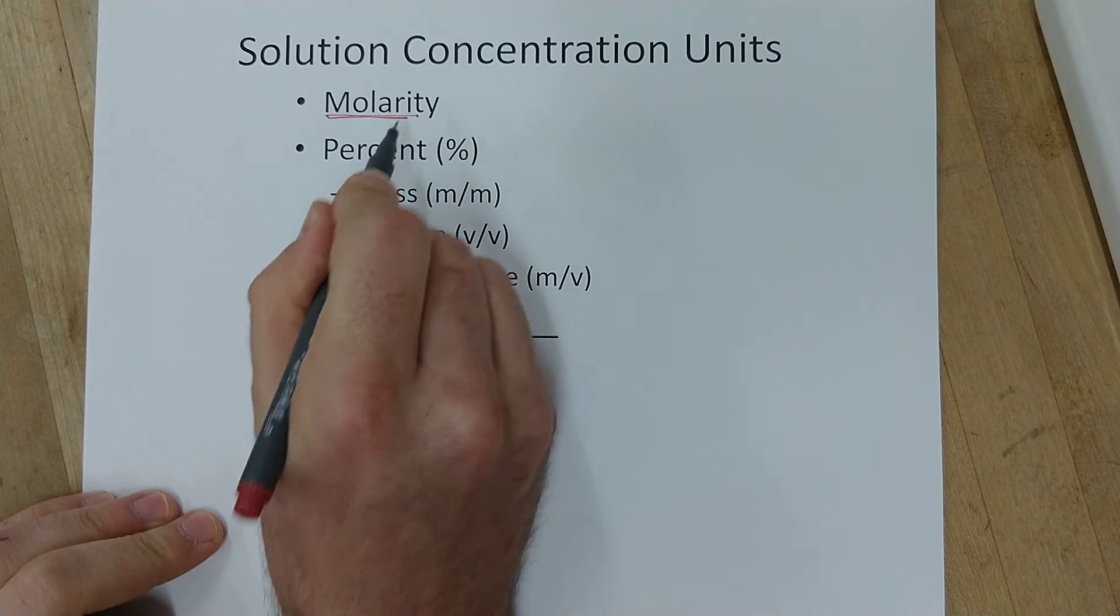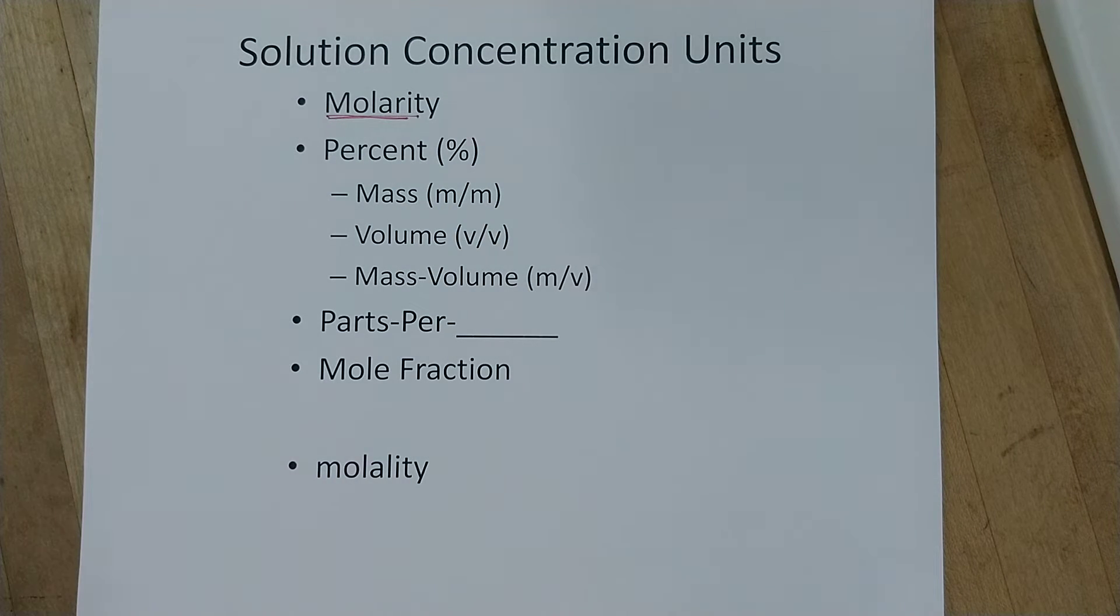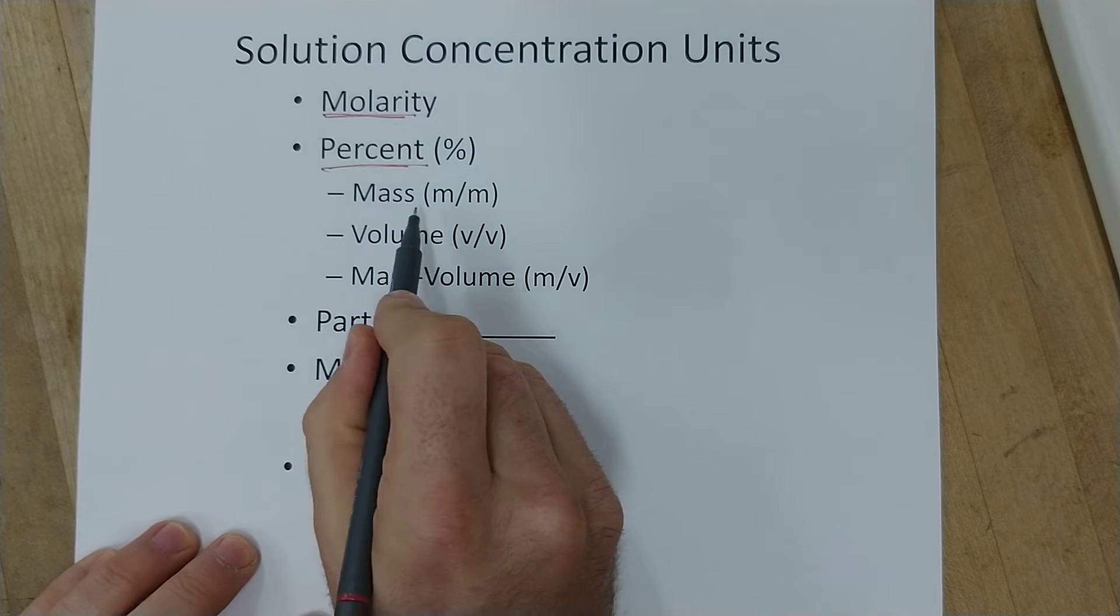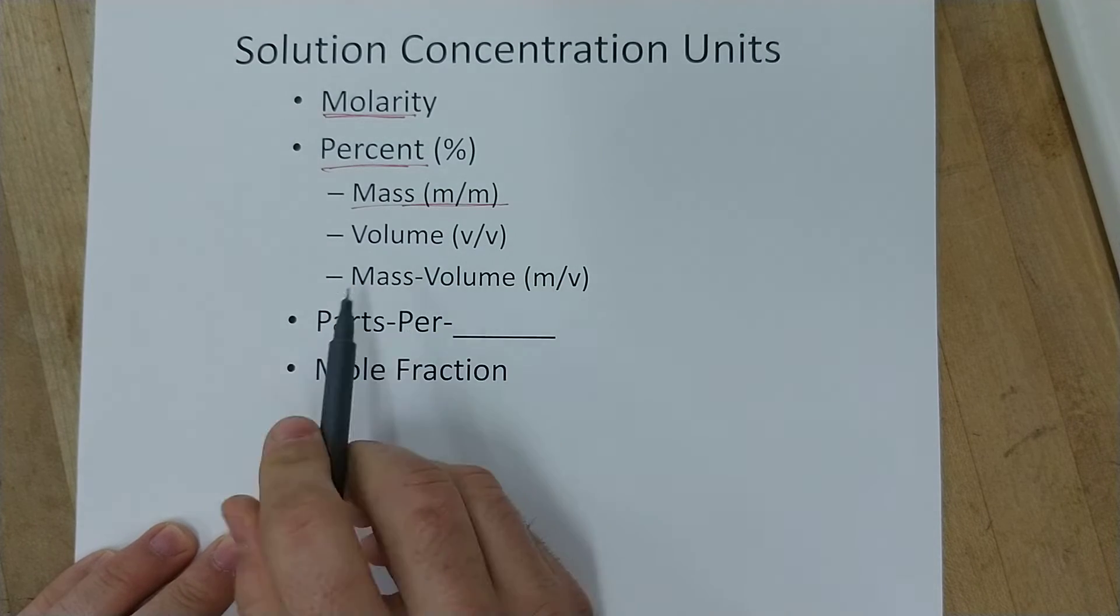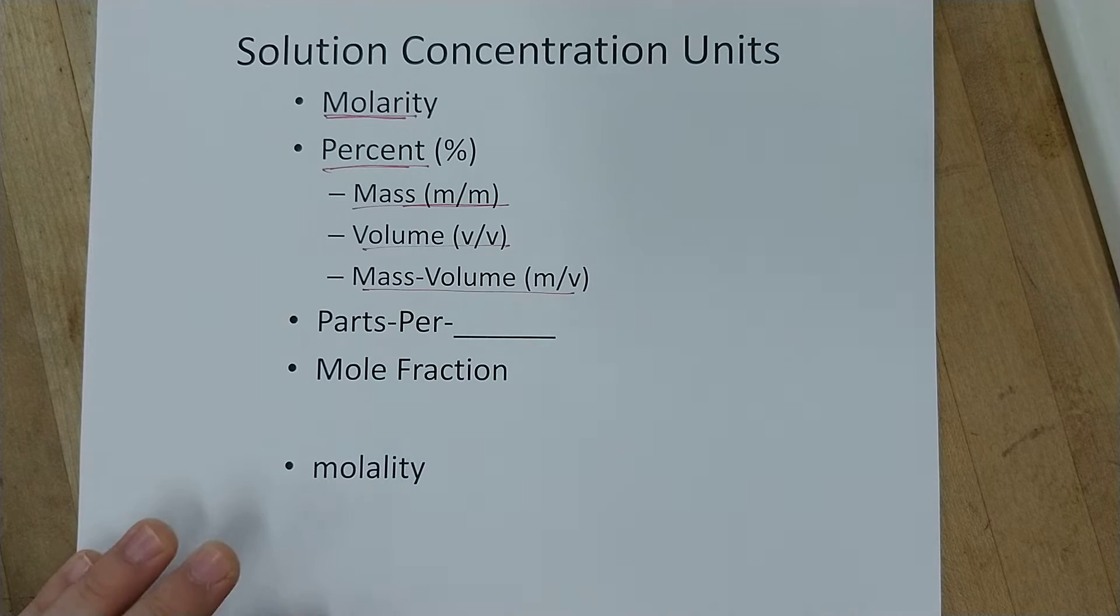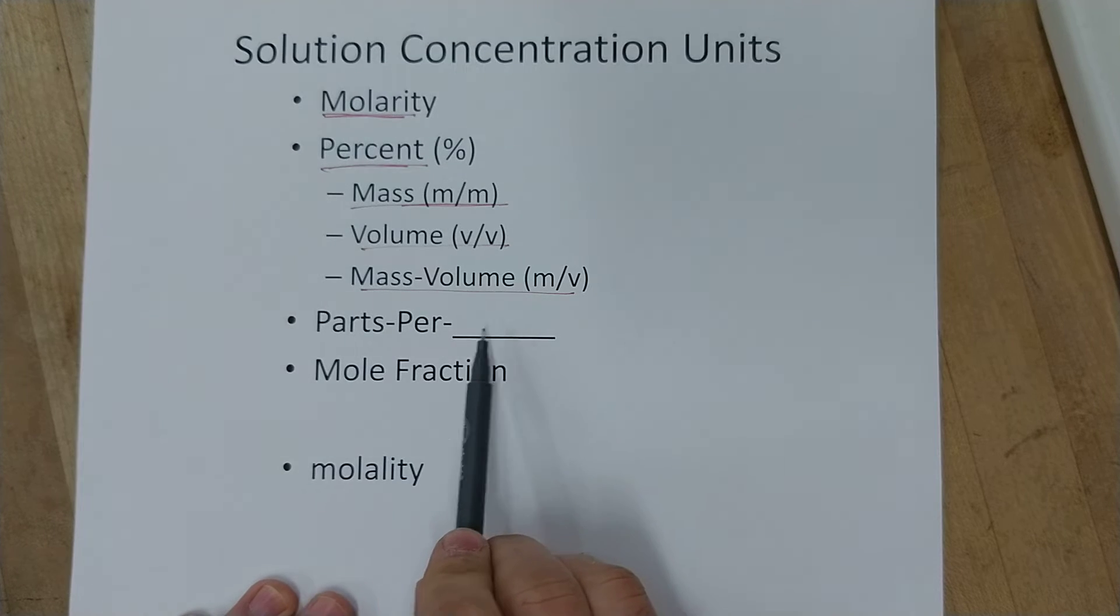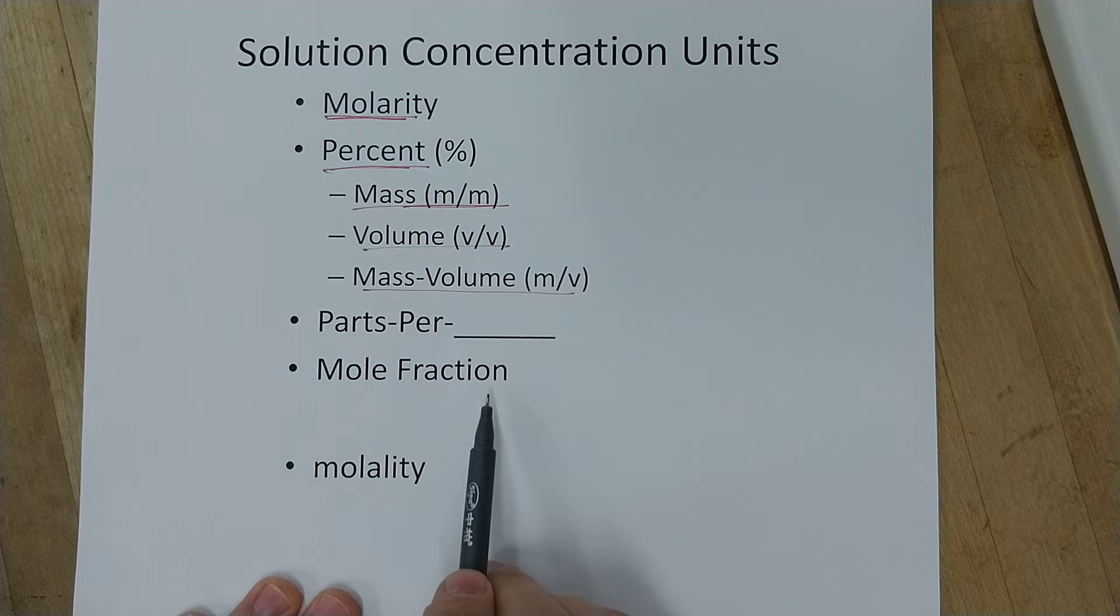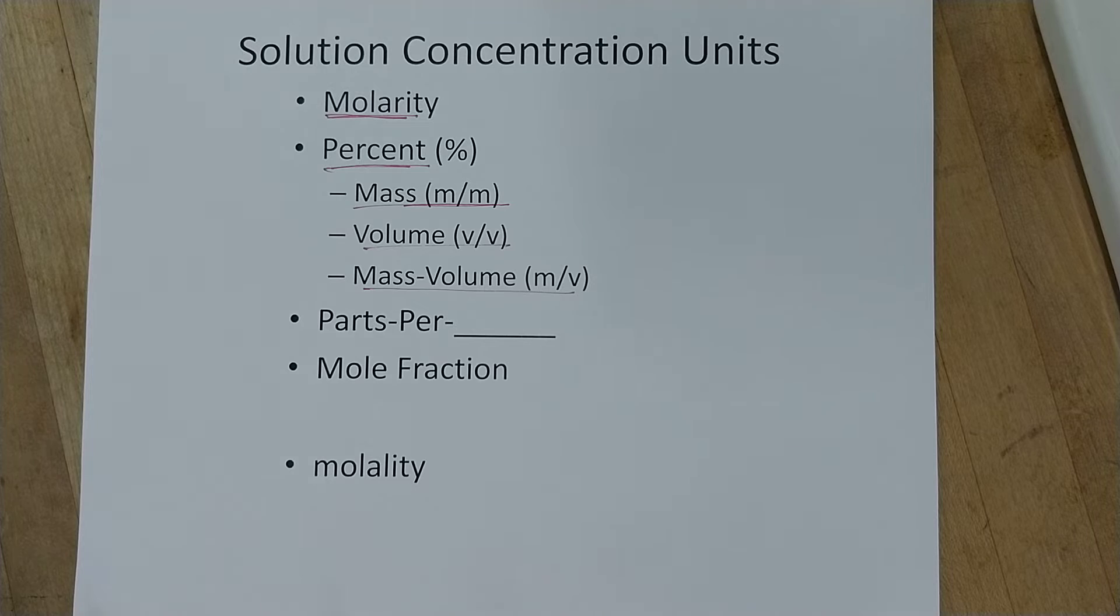You'll be very familiar with molarity from probably every chemistry class you ever took as well as this one. You'll be pretty familiar with percents. Mostly we talk about mass percents but you can also calculate a percent by volume or a mass to volume ratio for a percent. We want to talk about some new ones though as well. Parts per like parts per million or parts per billion. A mole fraction and lastly what's called a molality.